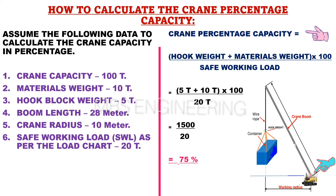To calculate the crane percentage capacity, the formula is: crane percentage capacity = (hook weight + materials weight) × 100 ÷ safe working load. Applying the given data: (5 ton + 10 ton) × 100 ÷ 20 ton.